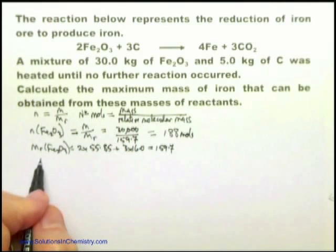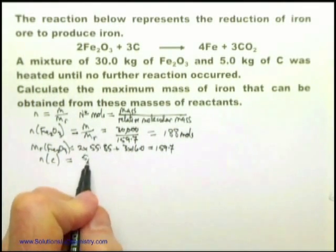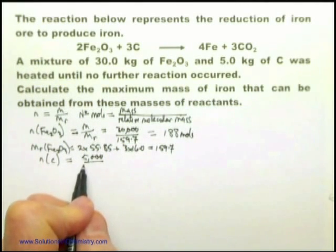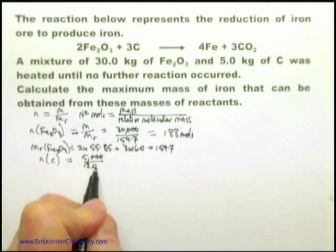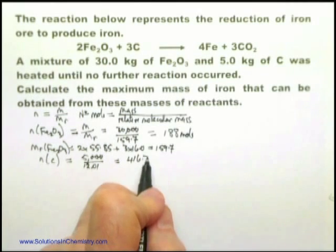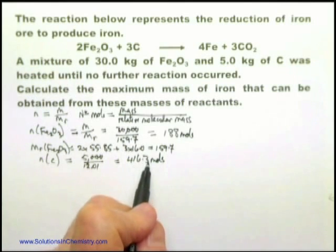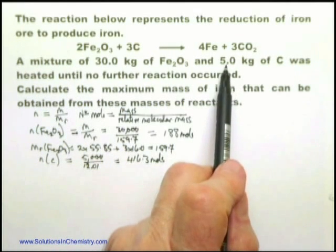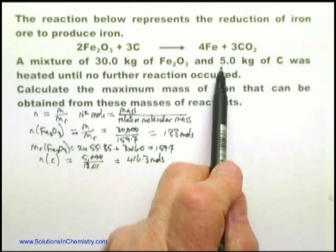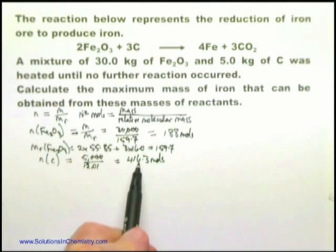Now I'm going to do the same for carbon: N of carbon equals 5,000 divided by 12 (from the periodic table), which equals 416.3 moles. You might question whether it's worth doing the 0.3, especially since the mass of carbon is quoted only to two significant figures. I put it in because it's an intermediate calculation, not the final figure, so at this stage it's okay to leave it like that.